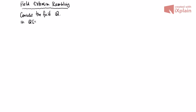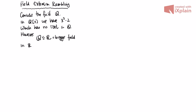I'm going to take a polynomial in Q that doesn't have a root. The polynomial is in Q[x]: we have x² - 2, which has no root in Q. However, we know that Q is contained in the real numbers, and in the real numbers there are roots. Q is contained in R, R is a bigger field, and in R, x² - 2 has a root — it has two of them, in fact: x = ±√2.